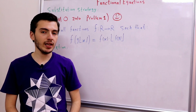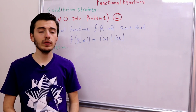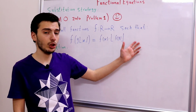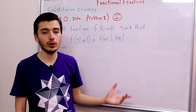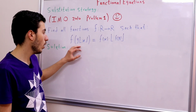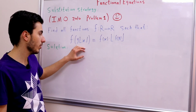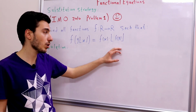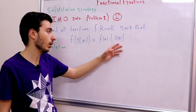In this problem, we're asked to find all functions f from ℝ to ℝ such that the following relation holds: f(y) · ⌊x⌋ = f(x) · ⌊f(y)⌋.